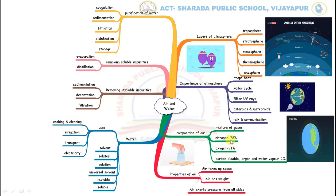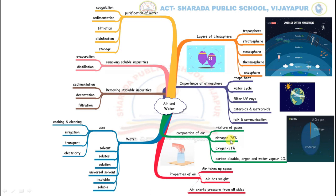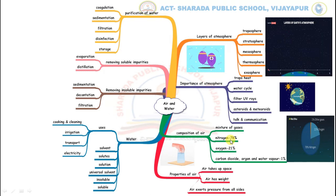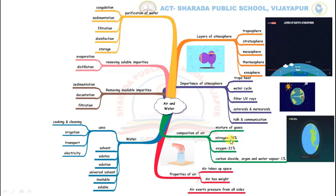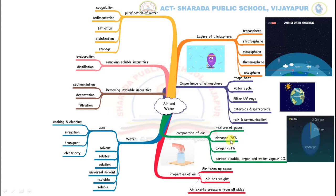Oxygen is needed for respiration and burning. Nitrogen, on the other hand, does not support burning — in fact, it controls burning. In the absence of nitrogen, even a small fire can become very big. Nitrogen is also used by plants to make food. Besides these gases, air also contains water vapor and dust particles.